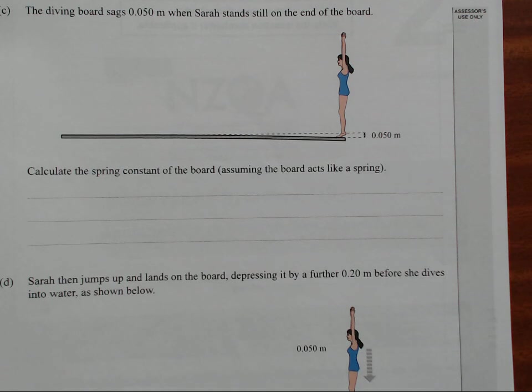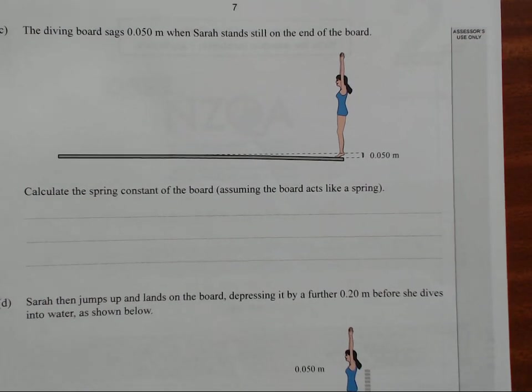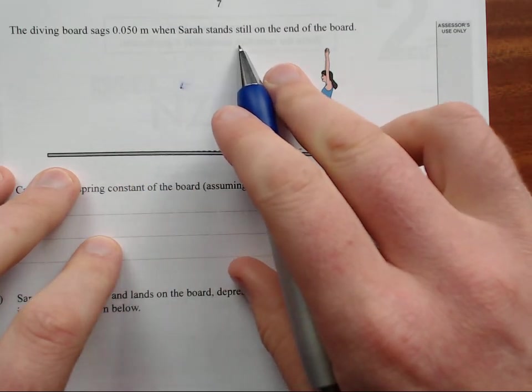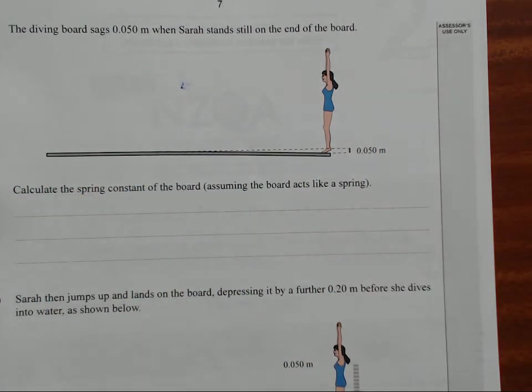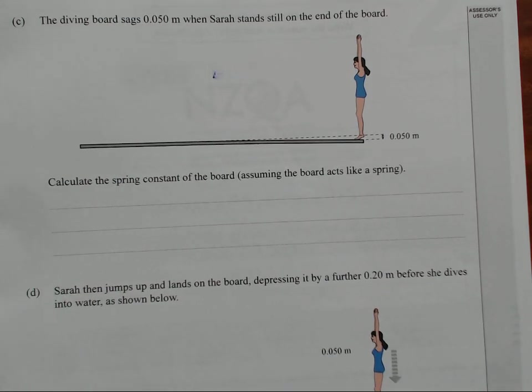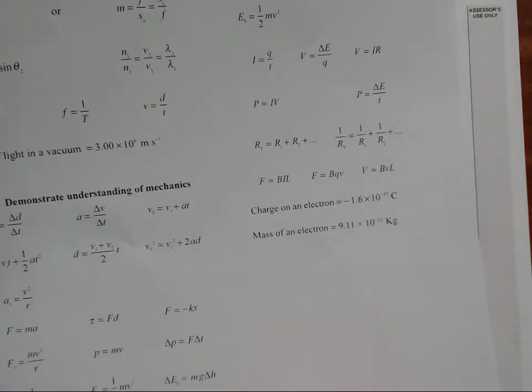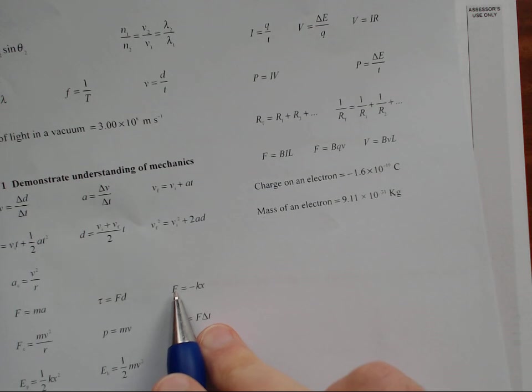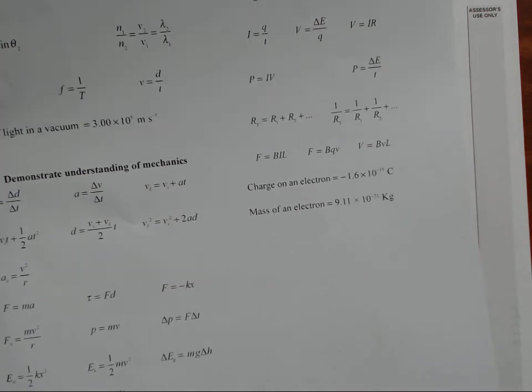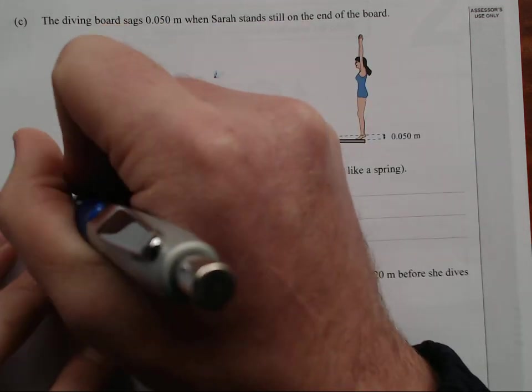Calculate the spring constant of the board, assuming that the board, sorry, the diving board sags, she's not a diamond board, sags 0.05 a meter when Sarah stands still at the end of the board. Calculate the spring constant of the board, assuming this board acts like a spring. So, let's find our formula sheet if we can. Here we go. This is, yeah. So, force equals minus spring constant times how far it's displaced, or how far it goes down. So, let's write that in. F equals minus k x.